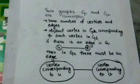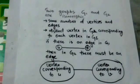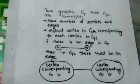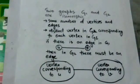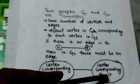Two graphs G1 and G2 are isomorphic if they have same number of vertices and edges, and there must be a distinct vertex in G2 corresponding to each vertex of G1, such that if there is an edge in G1 between the vertices U and V, then there must be an edge in G2 between the vertex corresponding to U and the vertex corresponding to vertex V.